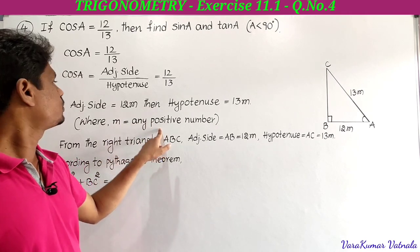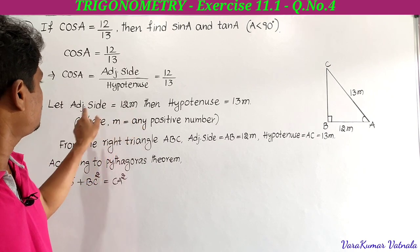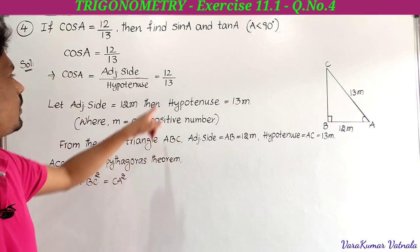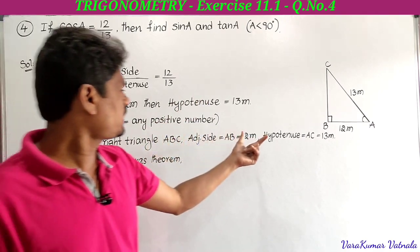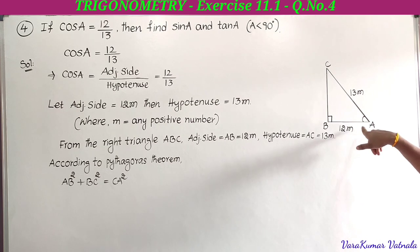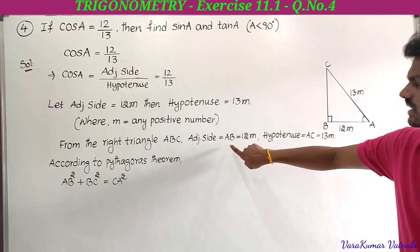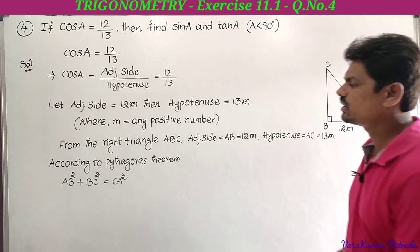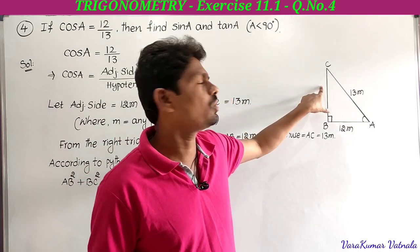Since it is a ratio, let adjacent side equal 12m, where m is any positive constant. Then hypotenuse equals 13m. From right triangle ABC, adjacent side AB equals 12m and hypotenuse AC equals 13m. According to Pythagoras theorem, AB square plus BC square equals CA square.